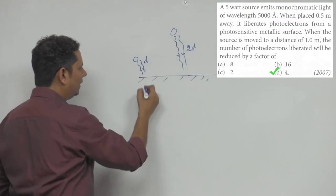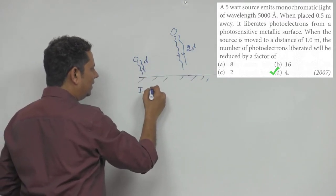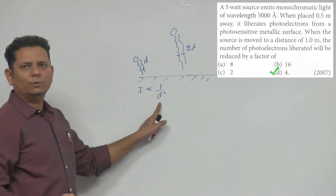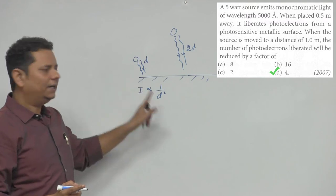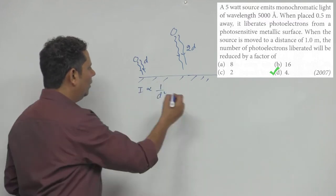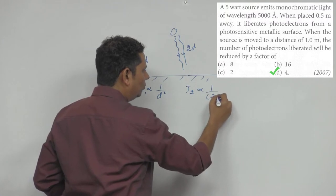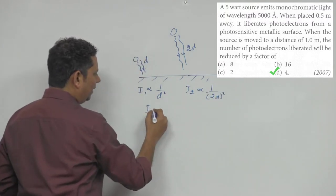The intensity that was coming, intensity is proportional to 1/D². We'll consider this as a point source, so it will be proportional to this. Here I₁ comes like this, and I₂ will be proportional to (2D)². This means